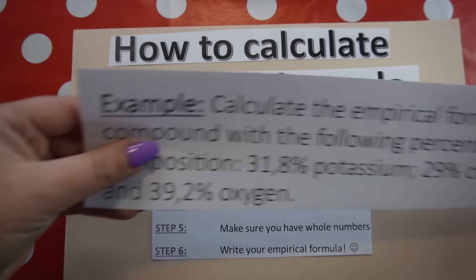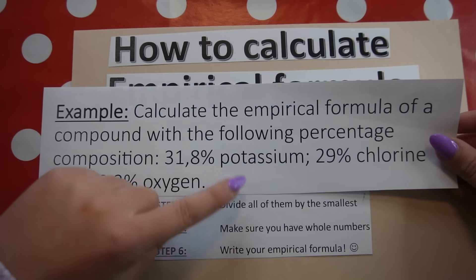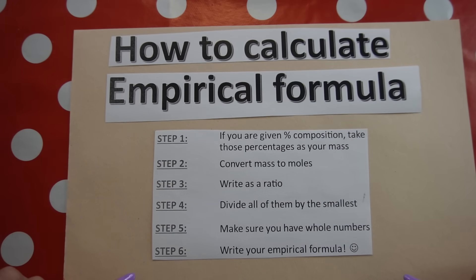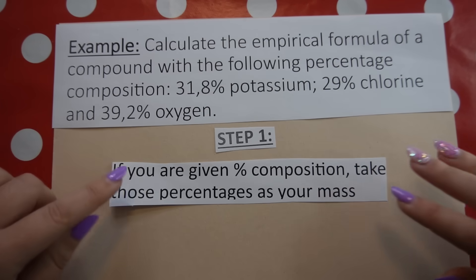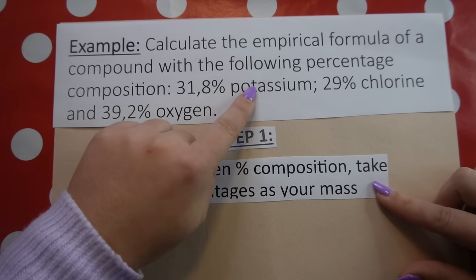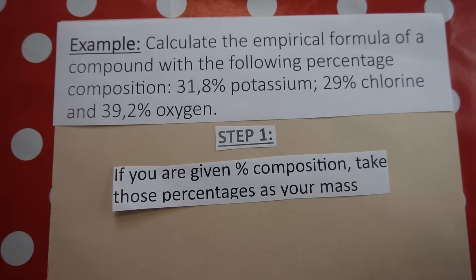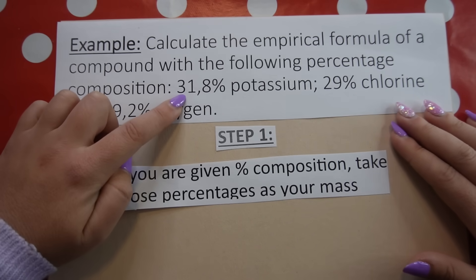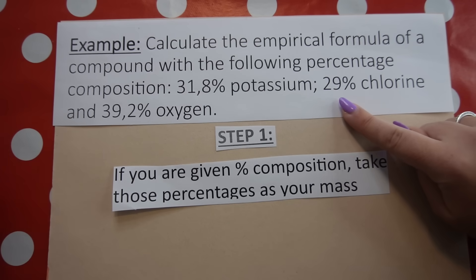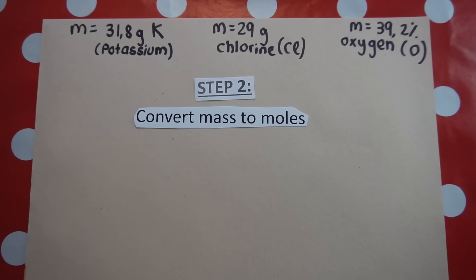For our first example, we have 31.8% potassium, 29% chlorine, and 39.2% oxygen. Step one: if given percentage composition, we take those percentages as our mass, because we assume 100 grams. So we have 31.8 g of potassium, 29 g of chlorine, and 39.2 g of oxygen.